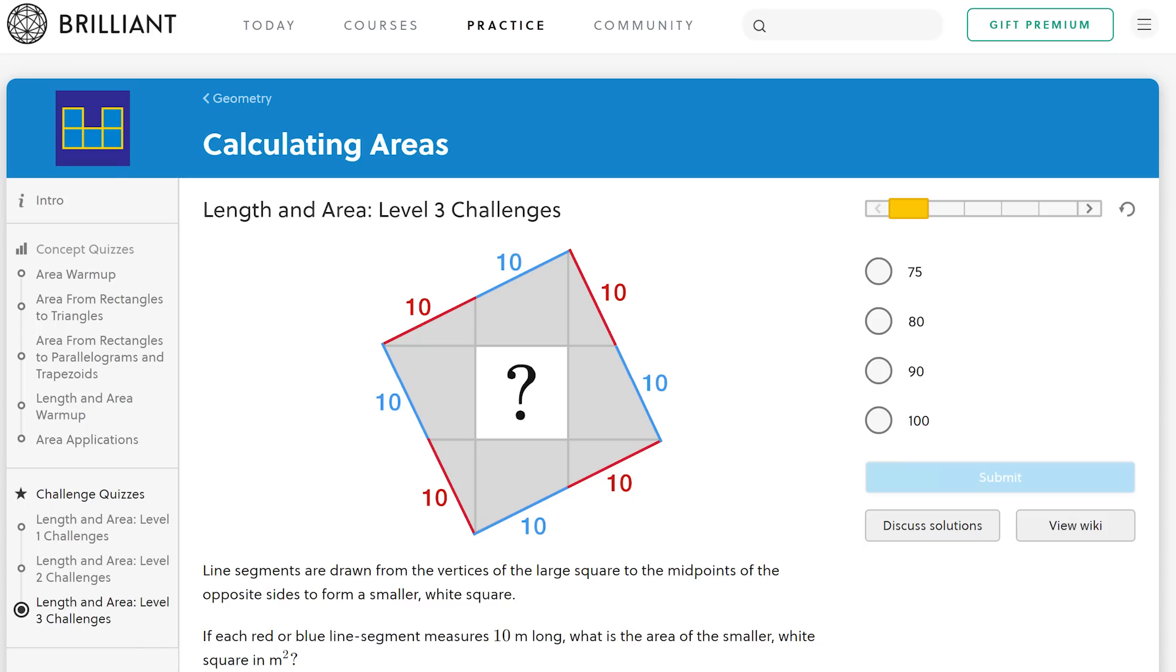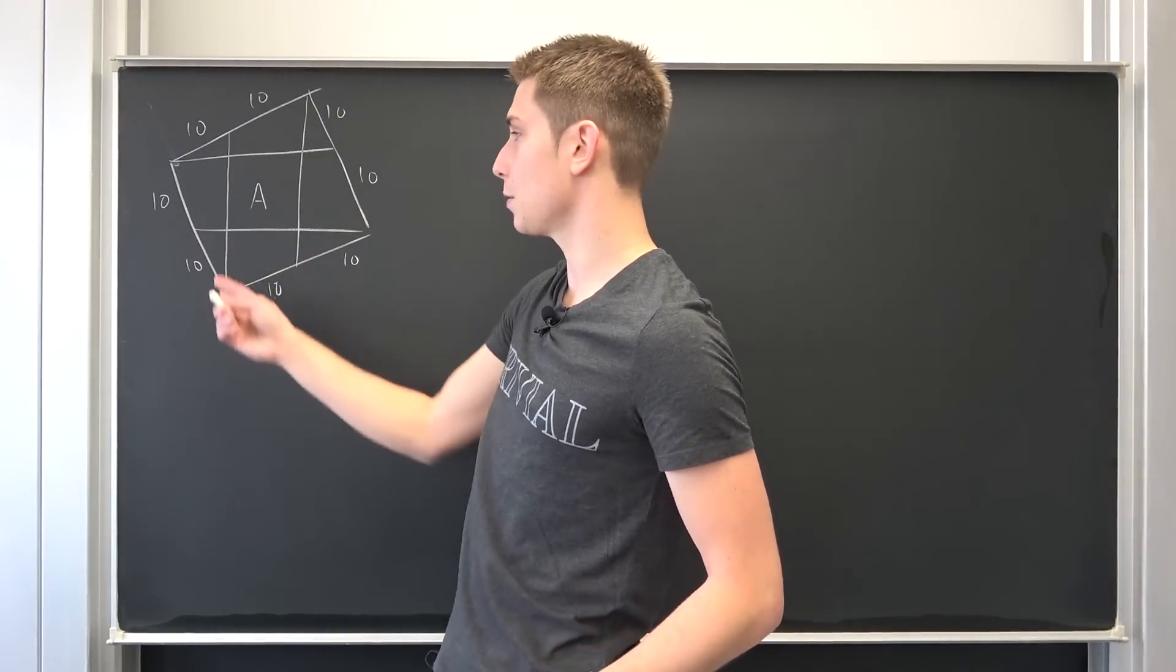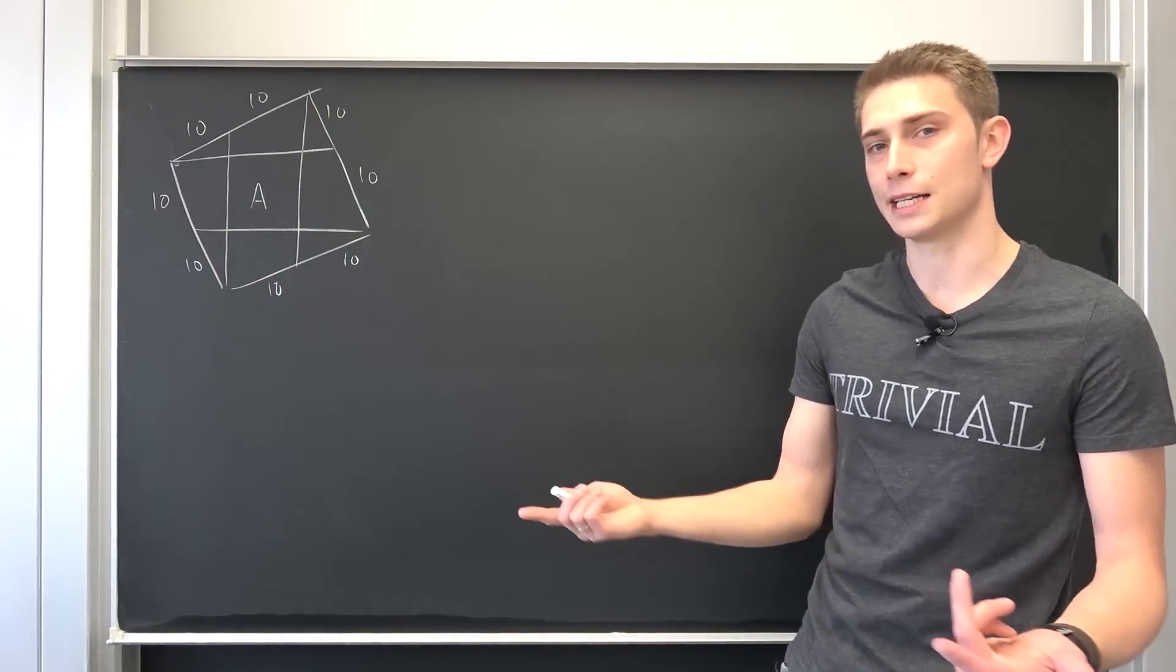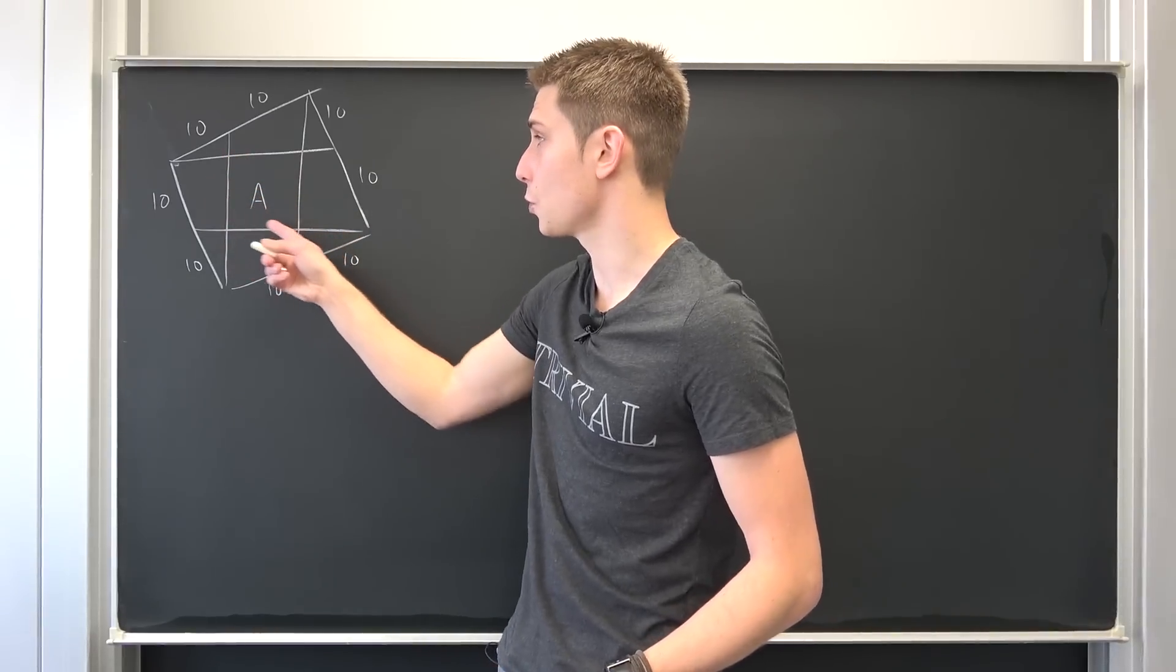We are going to work through this problem today. This is actually one exercise on the website when you take a look at the geometry course with the length and area stuff. This thing right here is a perfect square and we would like to find out the A in here, the area of this little square.